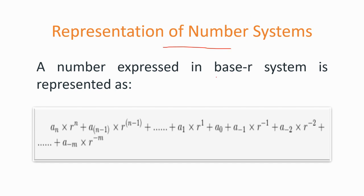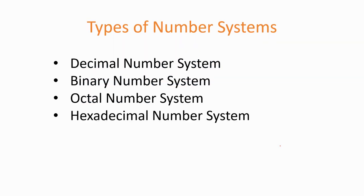Coming to the representation of numbers: for a system with base R, a number can be represented as a_n × R^n + a_(n-1) × R^(n-1) + ... + a_1 × R^1 + a_0 × R^0, and for the fractional part: a_(-1) × R^(-1) + a_(-2) × R^(-2) + ... + a_(-m) × R^(-m). The digits before the decimal point are represented with positive powers and the digits after the decimal point are represented with negative powers.